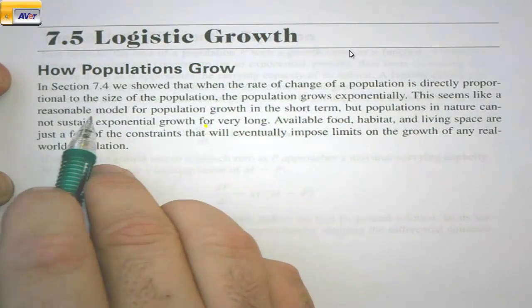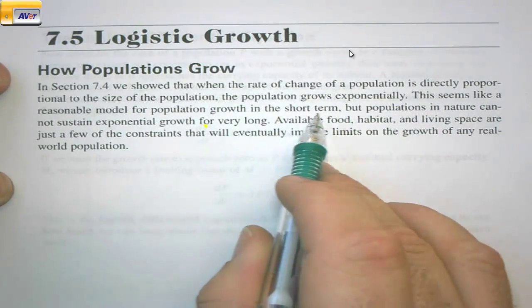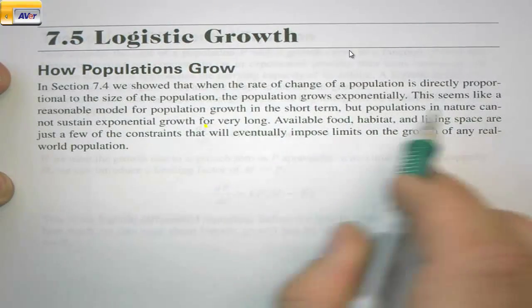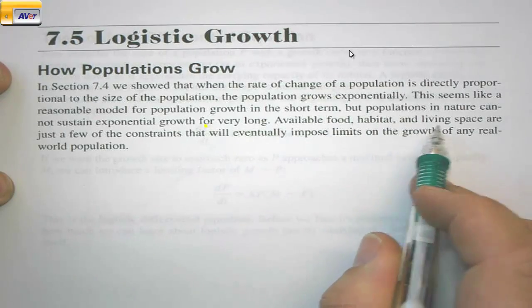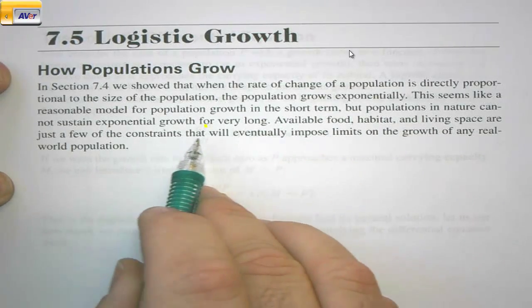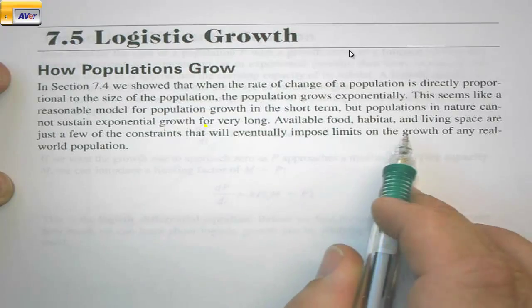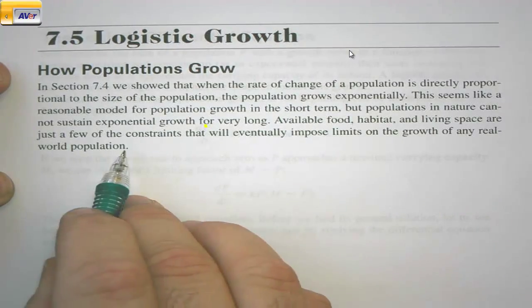This seems like a reasonable model for population growth in the short term, but populations in nature cannot sustain exponential growth for very long. Available food, habitat, and living space are just a few of the constraints that will eventually impose limits on the growth of any real-world population.